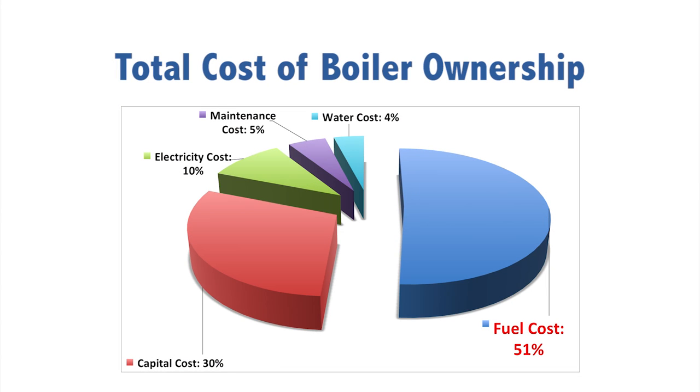The process of improvement in feed water temperature starts with measuring the feed water temperature and understanding the causes of the low feed water temperature. If you look at the overall cost of ownership of a boiler, the fuel cost is the major component. The capital cost and the maintenance cost of the boiler are a very small component, and it is the fuel costs year on year that form the major cost of operation and ownership of a boiler.